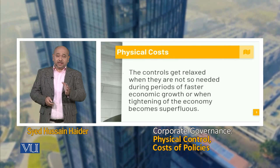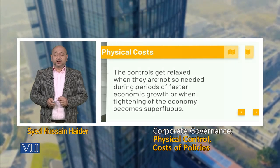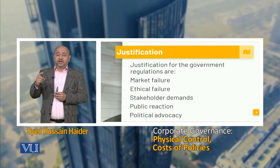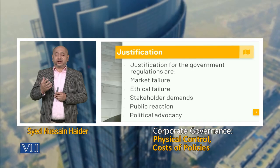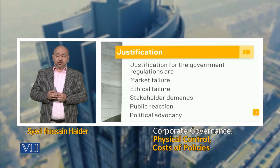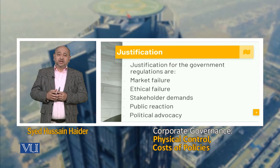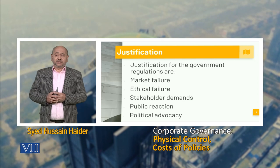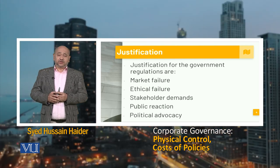That is how we see that the government tends to either control, catalyze, or mobilize. When talking about the justification for government regulations, it could be market failure, the failure of a particular sector, the failure of the market as a whole, various foreign implications, different consumer trends, or an override of a certain aspect of the economy.